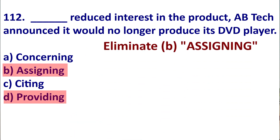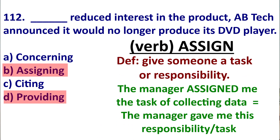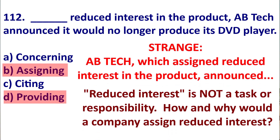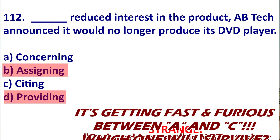Next, eliminate B. 'Assign' is a verb which means to give someone a responsibility or a task. For example, the manager assigned me the task of collecting the data — the manager gave me this responsibility. It would be strange to say 'ABT Tech assigned reduced interest in the product.' Reduced interest is not a responsibility, it is not a task. It's not logical to assign reduced interest in a product. So now we have A and C.